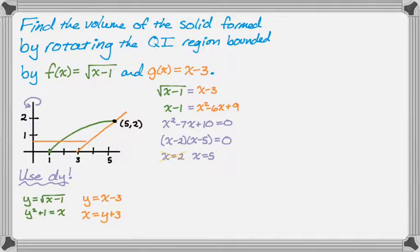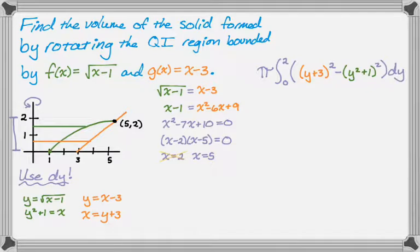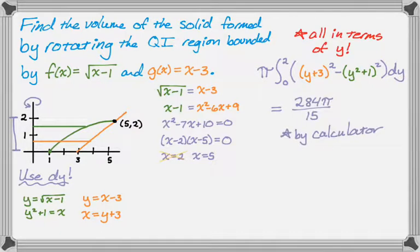Now setting up the washer method: the big radius is the right-minus-left distance to the outer curve, which is (y + 3) − 0 = y + 3, and the small radius is (y² + 1) − 0 = y² + 1. The bounds are y = 0 to y = 2. So the integral is π times the integral from 0 to 2 of [(y+3)² − (y²+1)²] dy. Check that everything is in terms of y. Using a calculator, this equals 284π/15.